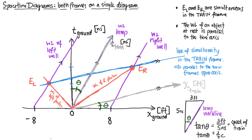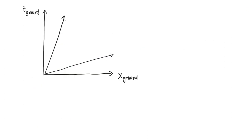This plot has gotten a little complex, so I'm going to refresh the page and identify the key characteristics of the two different frames on the same diagram. Here we have the same spacetime diagram showing the ground frame coordinates as perpendicular axes, and compressed inward from that, the train frame coordinates. This is our spacetime diagram showing two frames in the same diagram.